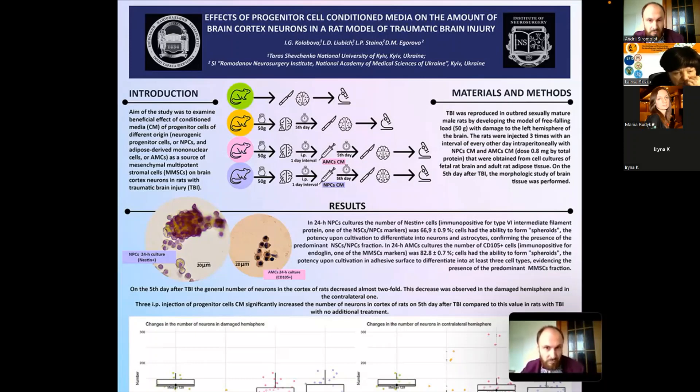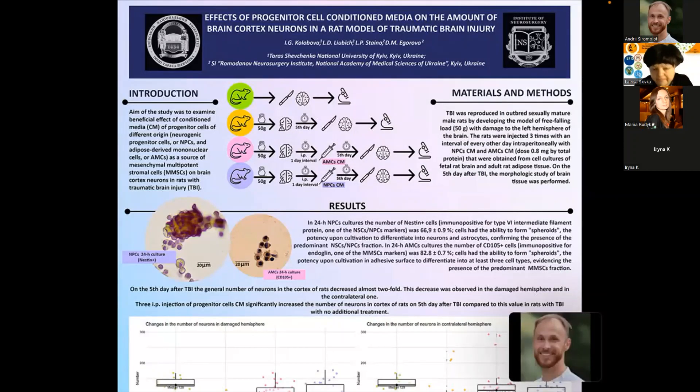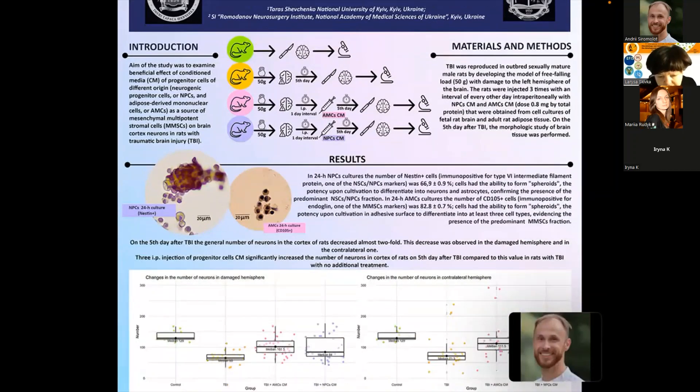And in the 24 hour adipose-derived mononuclear cells cultures were characterized by the number of CD105 plus positive cells. These are the cells immunopositive for endoglin and one of the mesenchymal multipotent stromal cells markers. The percentage of these cells was nearly 82 percent. And again you can see them here on the photo.